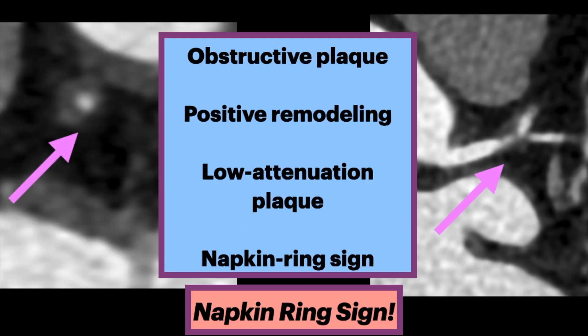When evaluating a coronary CTA, one should look for obstructive plaque, positive remodeling, low attenuating plaque, and the napkin ring sign.